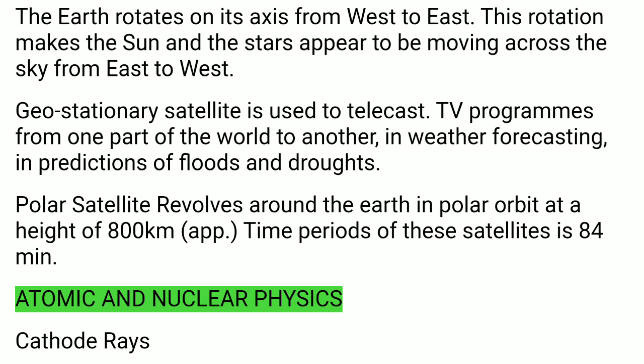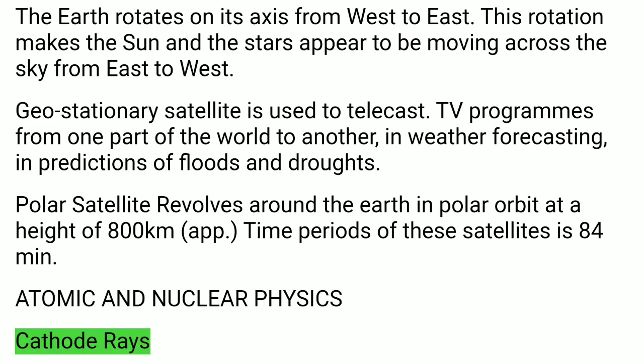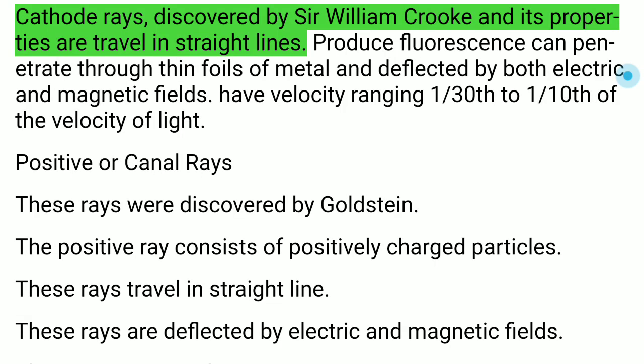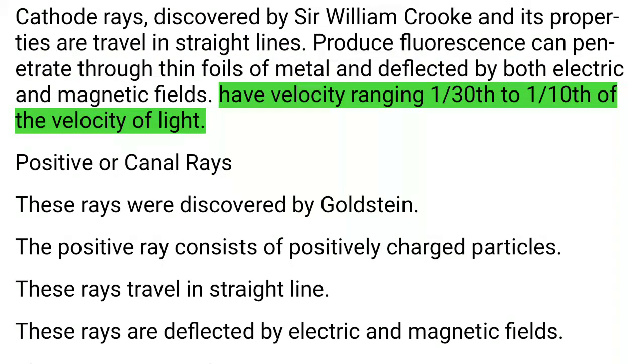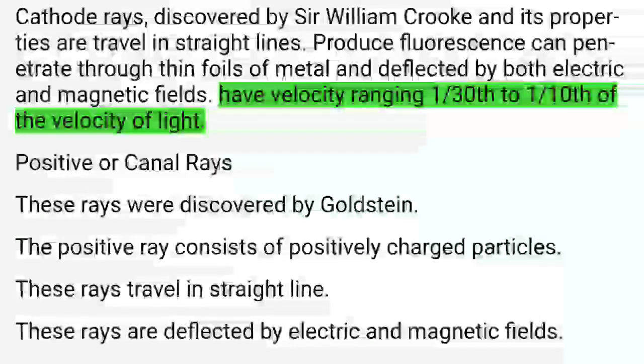Atomic and Nuclear Physics — Cathode Rays: Cathode rays were discovered by Sir William Crookes. Their properties include: they travel in straight lines, produce fluorescence, can penetrate thin metal foils, are deflected by both electric and magnetic fields, and have velocities ranging from 1/30th to 1/10th of the velocity of light.